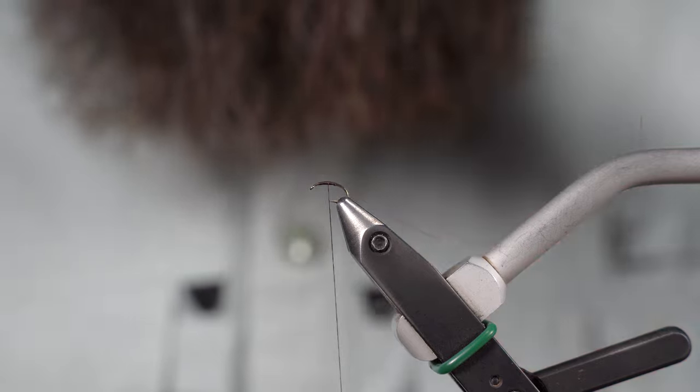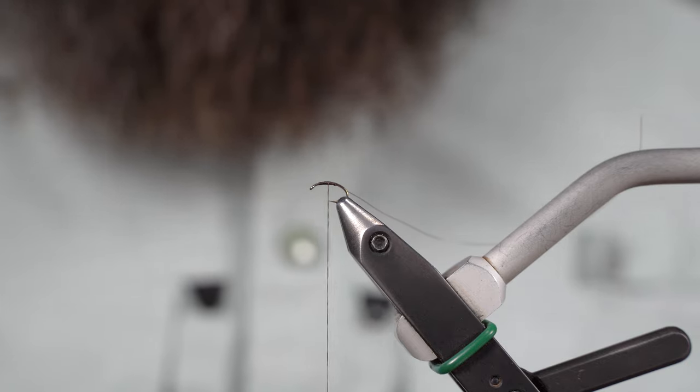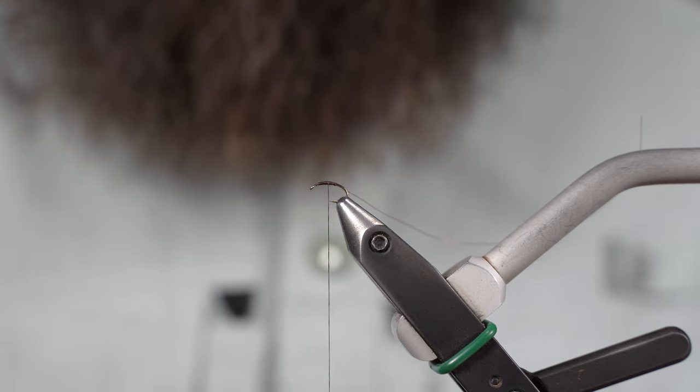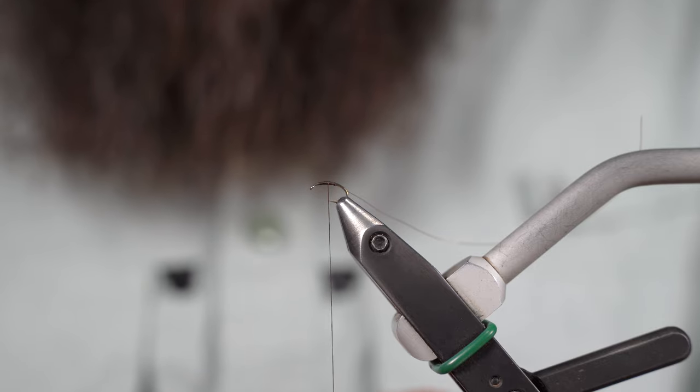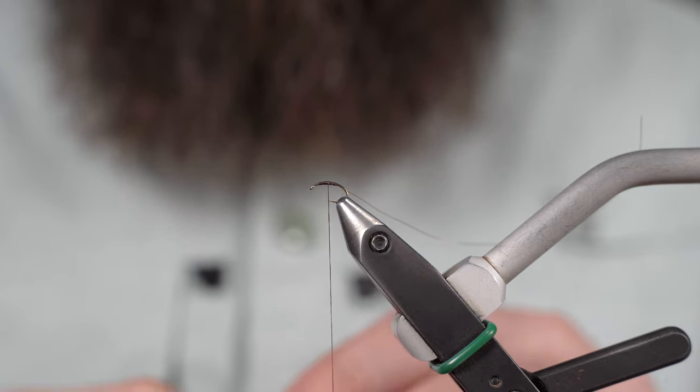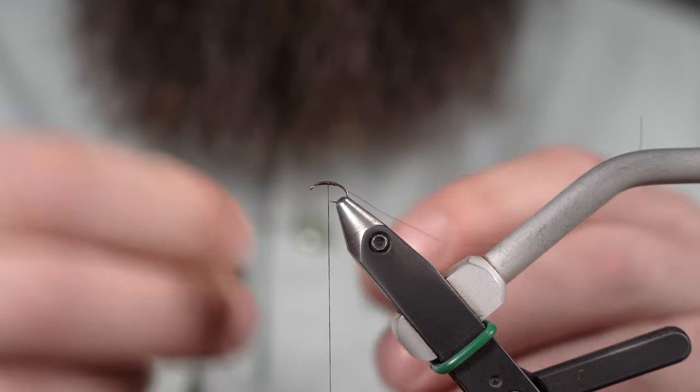Now I'm taking a sparkle emerger yarn. You could use a Zelon or even an Antron or something along those lines if you wanted to, or you could not even put a tail on this. It's really up to you.